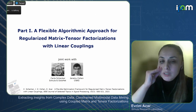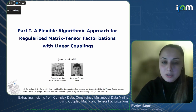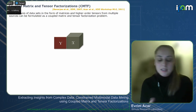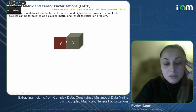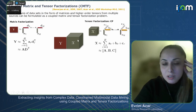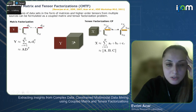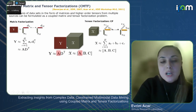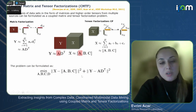We discuss a flexible algorithmic approach for jointly analyzing matrices and higher order tensors that enables incorporation of different loss functions, different types of constraints, and different types of coupling. Given a higher order tensor coupled with a matrix in the first mode, we can fit a CP model to the tensor and factorize the matrix such that the factor matrix from the coupled mode is the same in both factorizations. This minimizes the sum of approximation errors for the tensor and matrix parts.